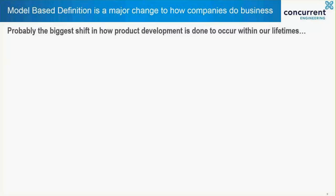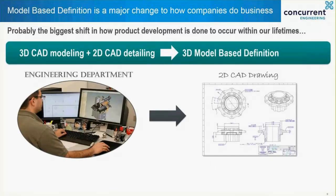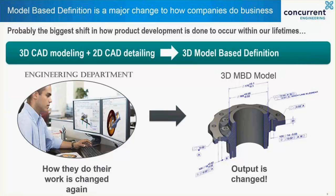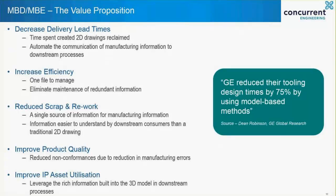When we make the move to model-based definition, how we do our work changes again — albeit using extended functionality in the same 3D CAD tool — but the output is changed to something much richer in content and of a much higher downstream value to the business. Delivery times are decreased as the time spent creating 2D detail drawings is reclaimed, further reinforced by the ability to automate the transfer of information through the business. We become more efficient as there is only one file to manage and update — the time effectively spent updating two separate sets of information, the 2D drawing and the 3D model, is eliminated.